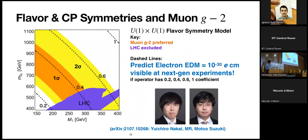By building a more complicated flavor model — instead of just a U(1) Froggatt-Nielsen kind of symmetry, putting in two U(1)s — we can drive the constraints to such low scales that you could have particles at the few-hundred-GeV scale while lying in a band that would explain the muon g-2 and not be excluded by flavor or EDMs. Interestingly, these predict the electron EDM would be right around the corner at the 10^{-30} level, which ACME 3 is expecting to probe in the near future. There's also a forthcoming EDM measurement from JILA in Colorado.